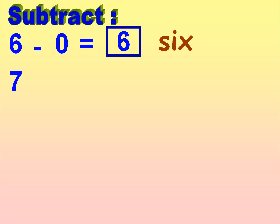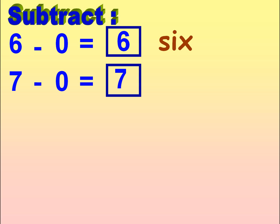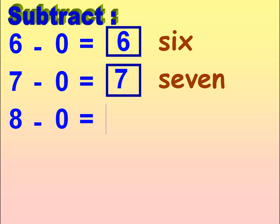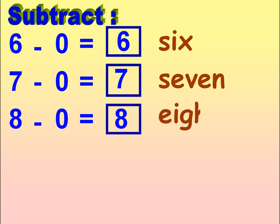7 minus 0 is equal to 7. S-E-V-E-N, 7. 8 minus 0 is equal to 8. E-I-G-H-T, 8.